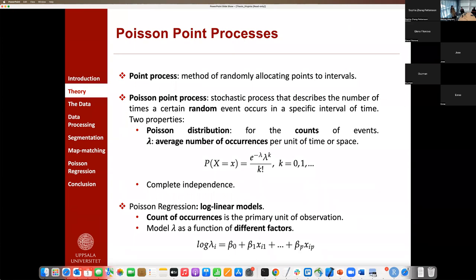The two properties that Poisson point processes have are that they are distributed according to the Poisson distribution with the parameter lambda that characterizes it. Lambda is the average number of occurrences and is also a measure of the intensity of the random variable X. Also, the complete independence, which means that the number of occurrences in one subregion is independent of the other ones. To perform a Poisson regression model, we use log-linear models. These models arise in situations in which the count of occurrences is the primary unit of observation. The idea is to model and predict lambda as a function of different factors.